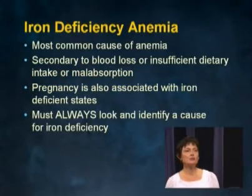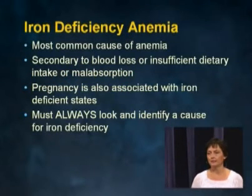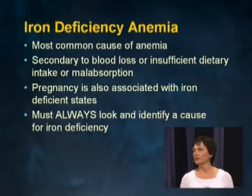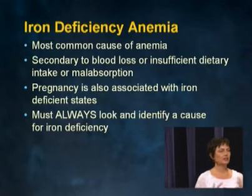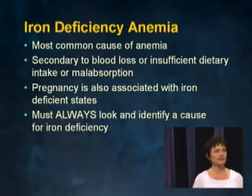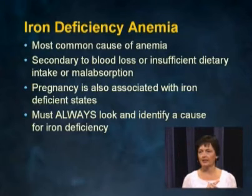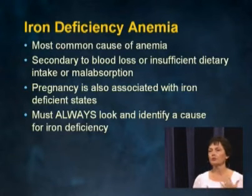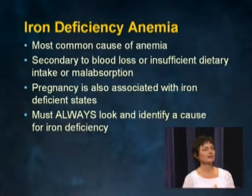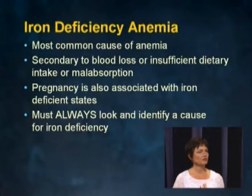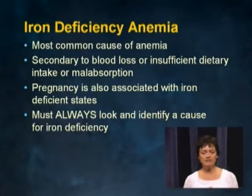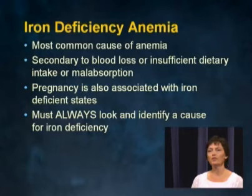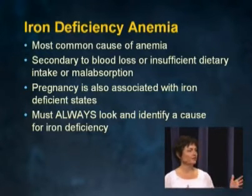Iron deficiency is the most common cause of anemia and should be the first thing you think about. It's generally secondary to loss of red cells, or occasionally insufficient dietary intake. Vegetarians can become iron deficient, as can patients with malabsorption syndromes — patients with Crohn's or other inflammatory bowel diseases. Pregnancy is almost always associated with iron deficiency. When you diagnose someone with iron deficiency, you can't just leave it at that — you've got to find out why.